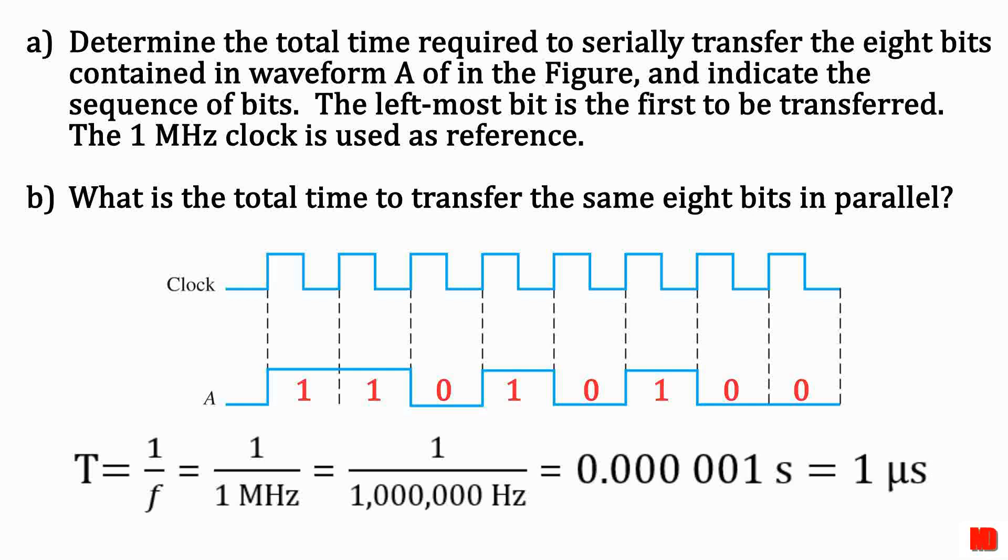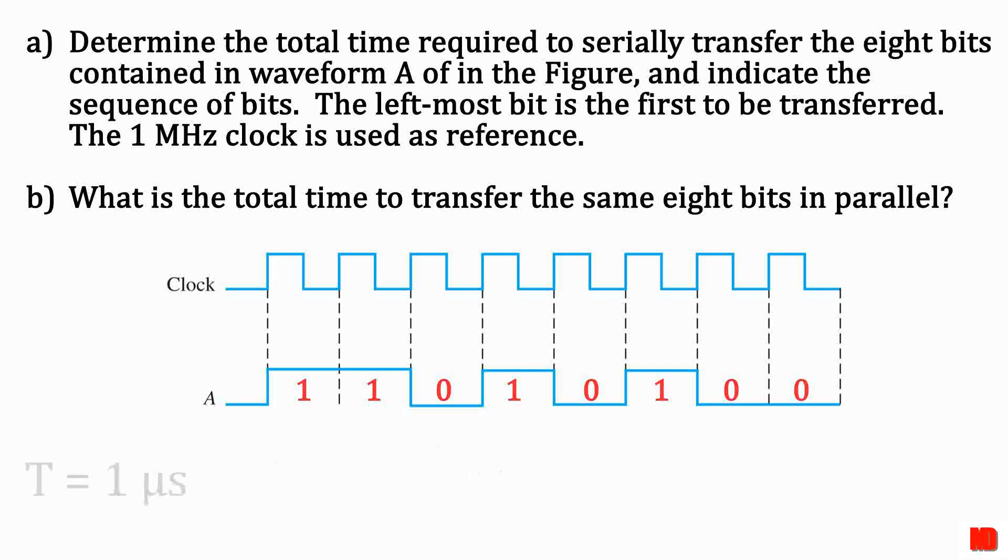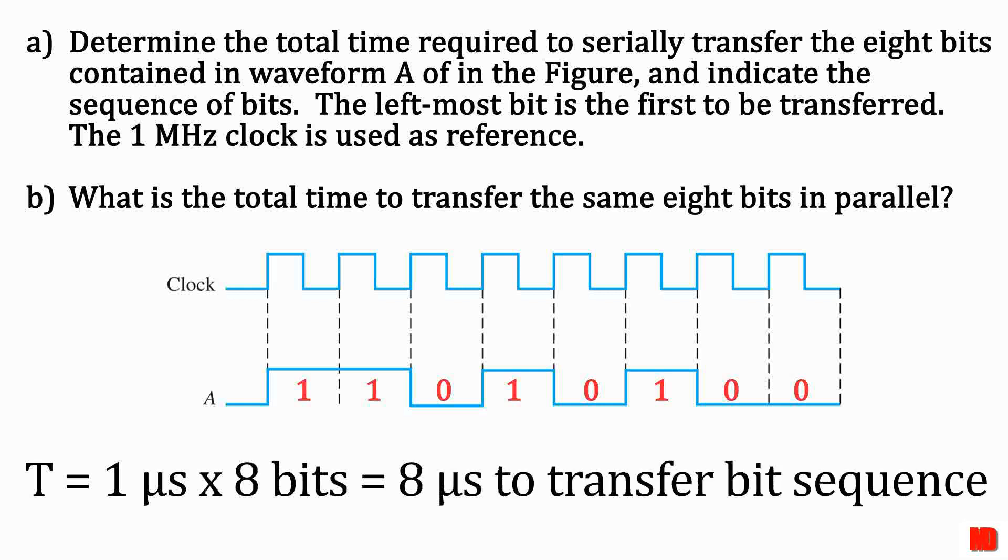So the period of the clock pulse, and thus the time it takes to transfer 1 bit, is 1 microsecond. Multiplying by 8 for 8 bits gives us 8 microseconds. It takes 8 microseconds to transfer these 8 bits serially.